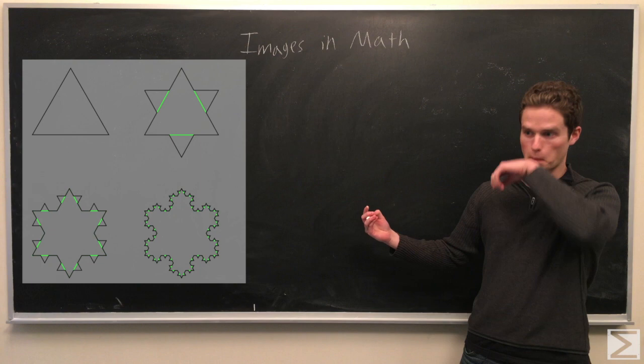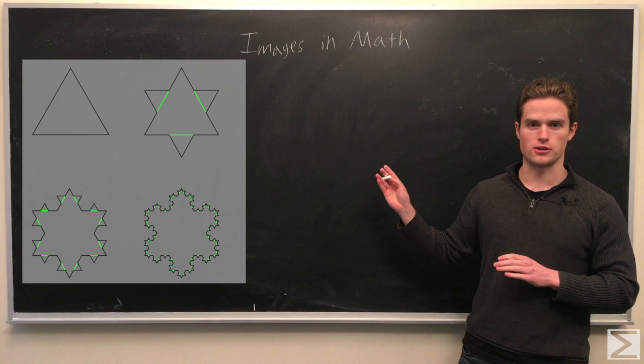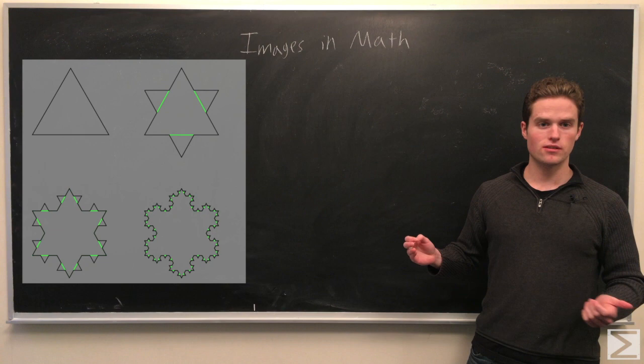And so here we will see the first four iterations of this process. So a few calculations we can run through. We can calculate the perimeter and area of this figure.